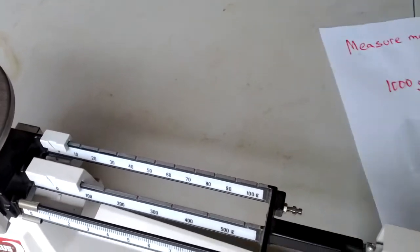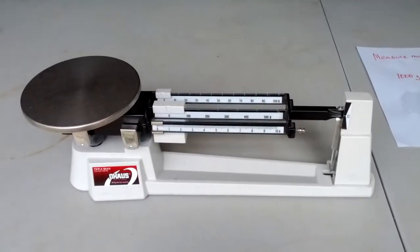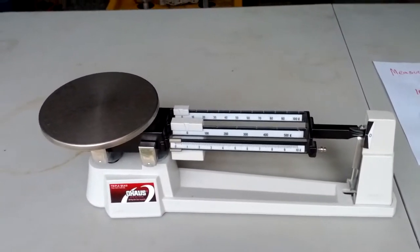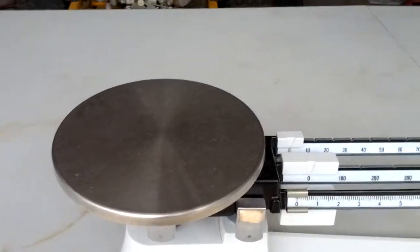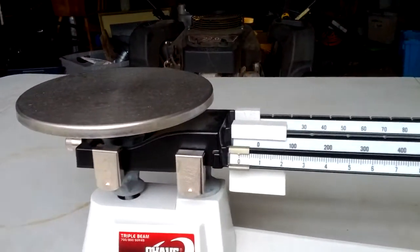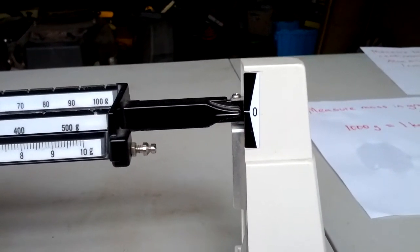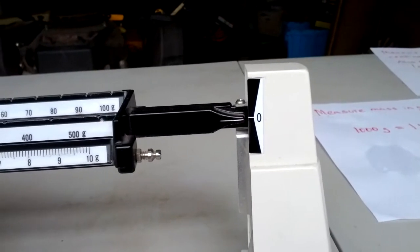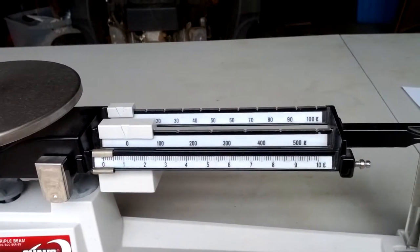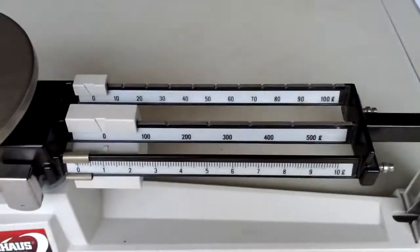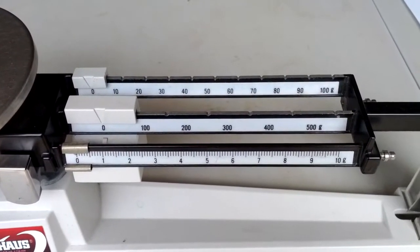We use a triple beam balance to measure mass. You put the object that you want to find the mass of on the pan. But before you do that, you have to make sure that the balance is at zero on the scale. And before you do that, you have to check these little masses that are already on here called riders. There's three riders and there's three beams. So that's why it's called a triple beam balance.